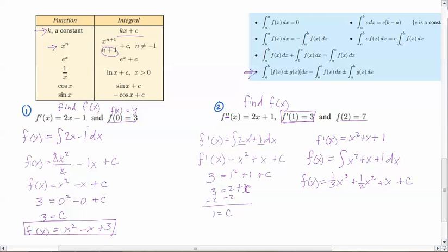So again, I've got f of 2 is 7. So f of x equals 1 third times x cubed, now x cubed would be 2 to the third power, which is 8, plus 1 half times 2 squared plus 2 plus c. And f is 7.